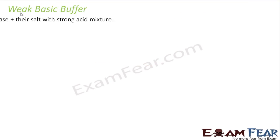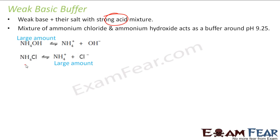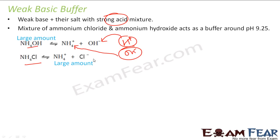Similarly, we have a weak base buffer. Here we take a weak base plus the salt of a strong acid. For example, ammonium hydroxide (weak base) and ammonium chloride (salt). If I add H⁺ ions, they combine with OH⁻ from ammonium hydroxide. If I add OH⁻ ions, they are consumed by the NH₄⁺ ions. So this buffer can withstand a lot of added base, keeping the pH from going up. Its pH is around 9.